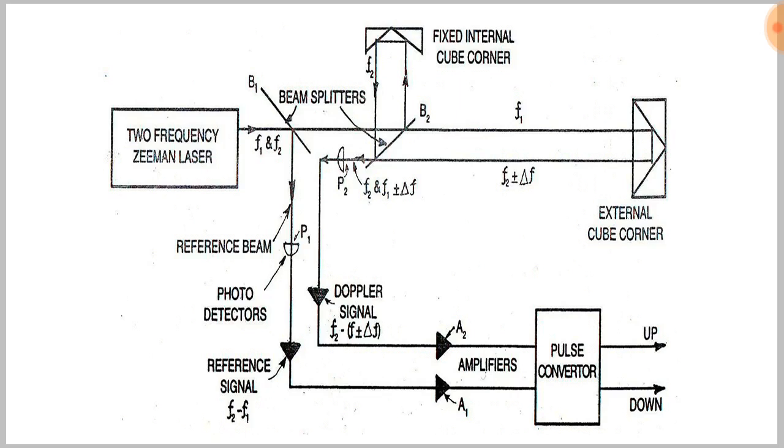Now the external cube corner moves, which produces a change in frequency f1, which is noted as delta f1. The light beam then moves towards the photo detector P2 where it comes with frequency f2.